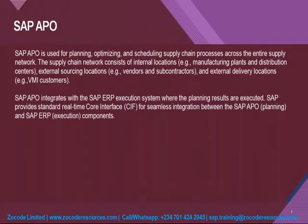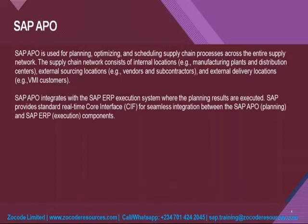SAP APO is a planning tool within the SAP Supply Chain Management system, used to generate forecasts to efficiently manage the supply chain. It is used for planning, optimizing, and scheduling supply chain processes across the entire supply network — including internal locations like manufacturing plants and distribution centers, external sourcing locations like vendors and subcontractors, and external delivery locations like customers. SAP APO integrates with SAP ECC via a standard real-time Core Interface, which provides seamless integration between ECC and APO.